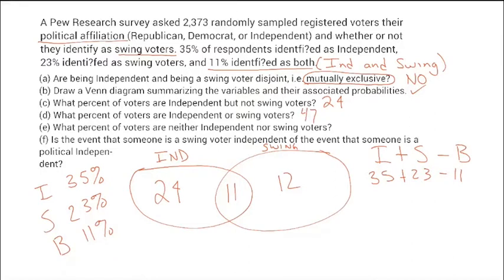What percentage are neither Independent nor swing voters? That's the complement of 47%: 100 − 47 = 53%. Key distinction: if the question asks for a percent, give a percent; if it asks for a probability, give a decimal to four decimal places. Is the event that someone is a swing voter independent of the event that someone is politically Independent? This is essentially the same question as part a — the answer is no.